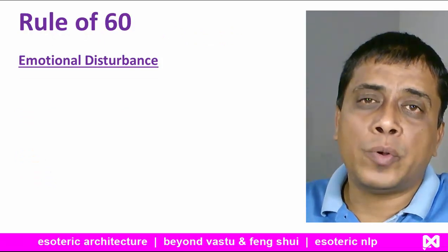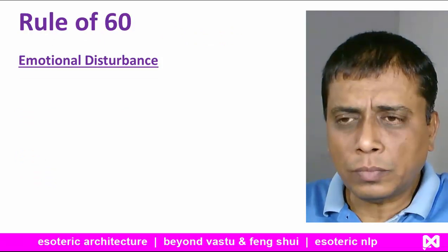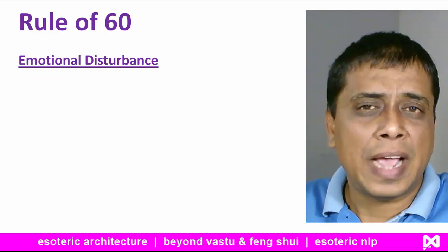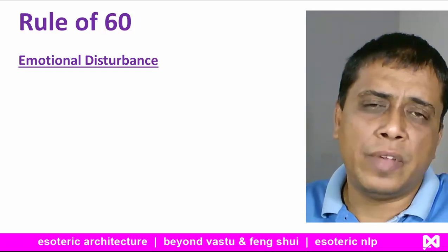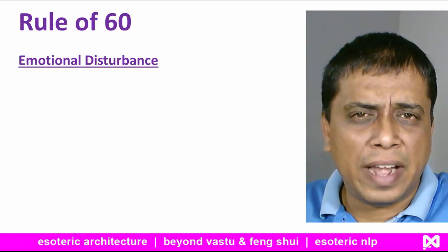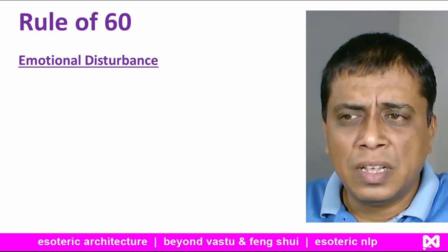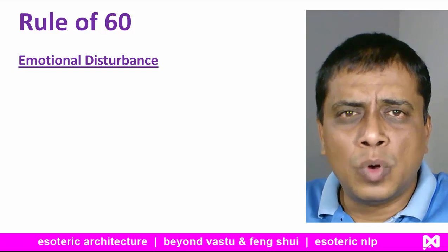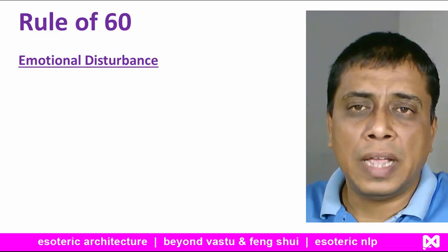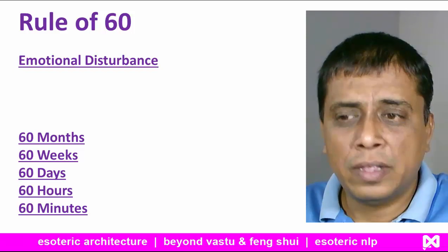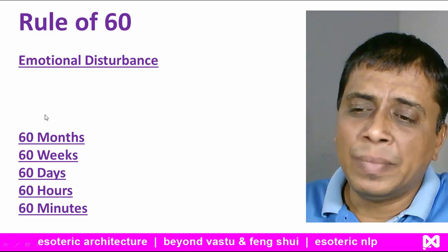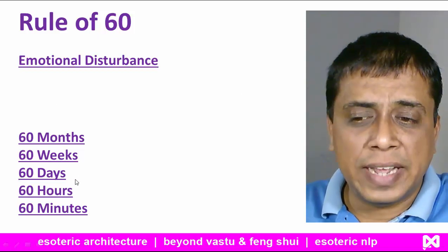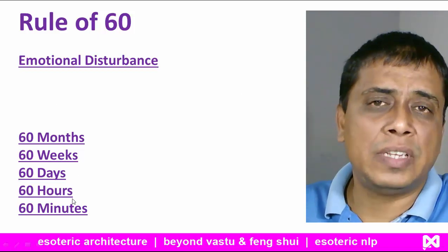I am going to introduce the Rule of 60. All problems are because of emotional disturbances. The rule is: 60 months, 60 weeks, 60 days, 60 hours, and 60 minutes. Any negative emotion — it might be anger, fear, anxiety, or stress — you hold it for these time periods and see what happens.